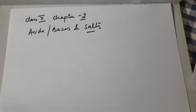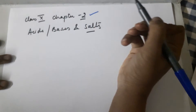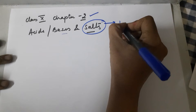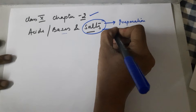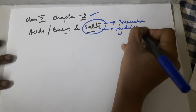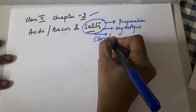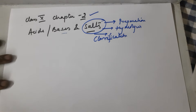Good evening, Class 10. The agenda for today's class is Chapter 2 of chemistry — acids, bases, and salts. I will be covering the salts: the preparation of salts, hydrolysis of salts, and finally the classification of salts.